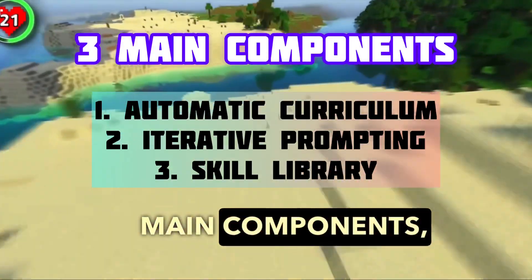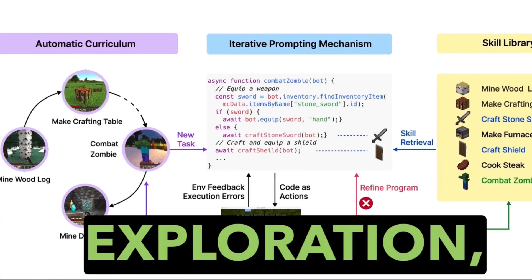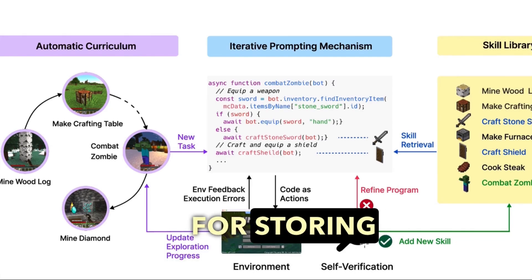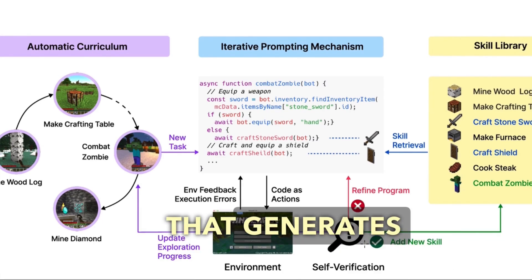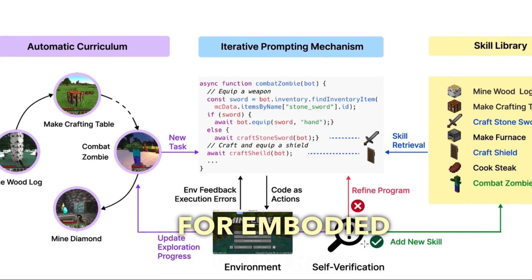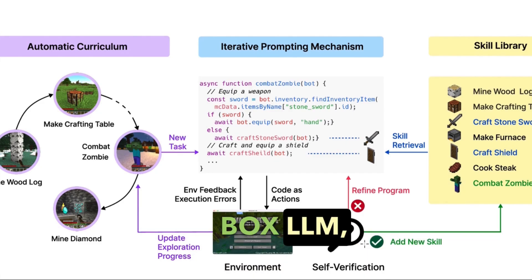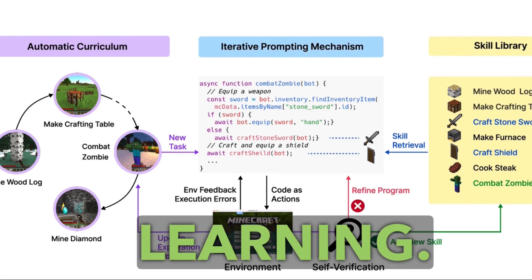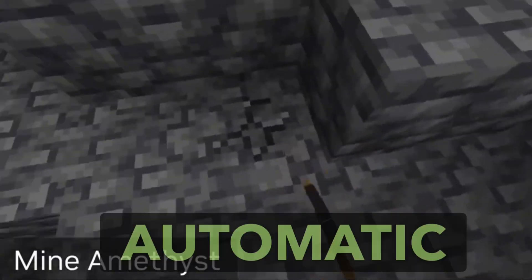Voyager has three main components: an automatic curriculum that maximizes exploration, a skill library for storing and retrieving complex behaviors, and a new prompting mechanism that generates executable code for embodied control. You can see the executable code here. Voyager interacts with a black-box LLM — in this case GPT-4 — through prompting and in-context learning. Voyager attempts to solve progressively harder tasks proposed by the automatic curriculum.